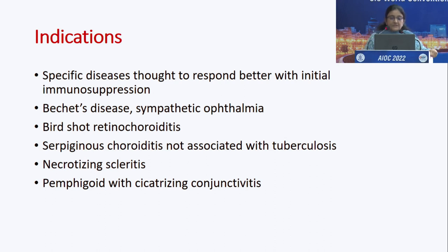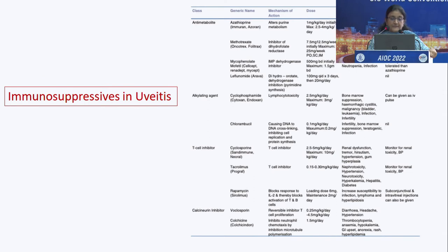Indications for immunosuppressives include Behcet's disease, sympathetic ophthalmia, birdshot retinochoroiditis, serpiginous choroiditis not associated with tuberculosis, and necrotizing scleritis. The basic guideline in India is that tuberculosis is very rampant — we must rule out tuberculosis or underlying HIV before putting the patient on any kind of immunomodulatory drugs. Complete blood counts and platelet counts have to be repeated every four weeks.